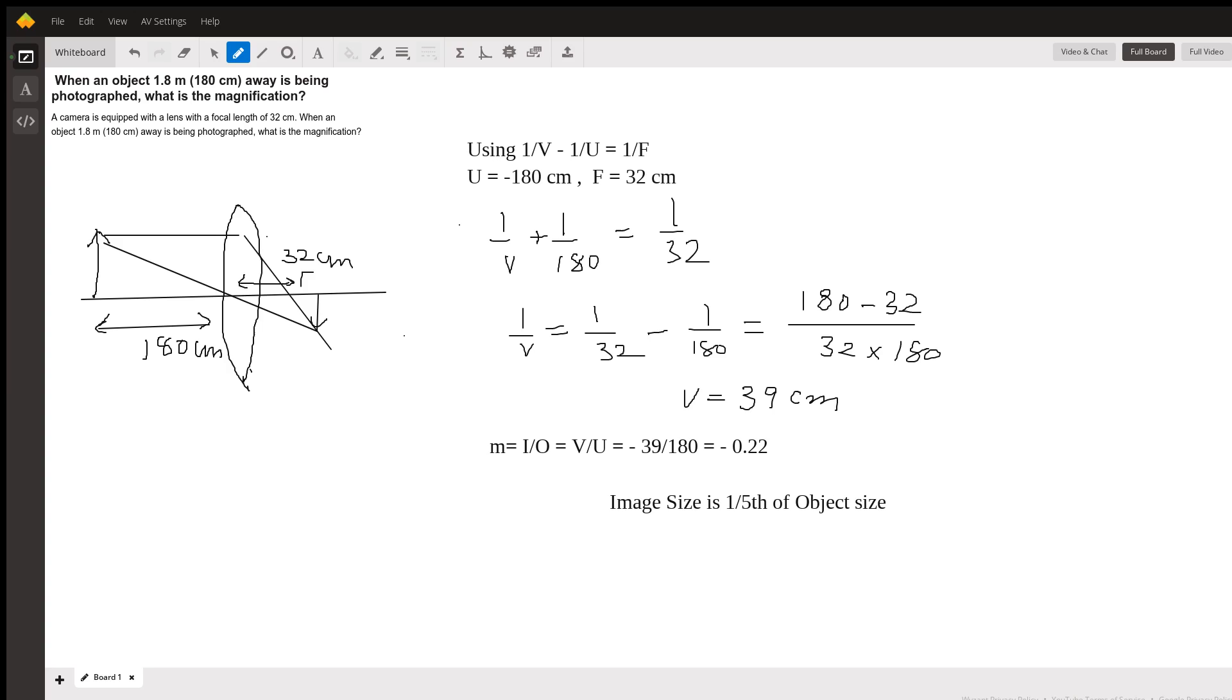We use the formula for the lens: 1/v - 1/u = 1/f, where u is the distance of the object, f is the focal length, and v is the distance of the image. We use the sign convention that all distances on this side of the lens are positive and this side are negative.